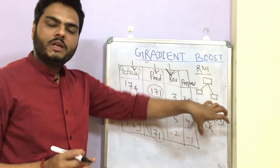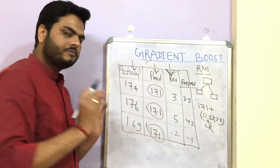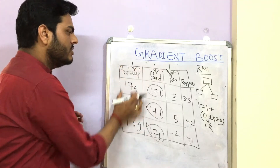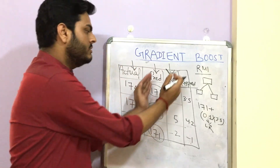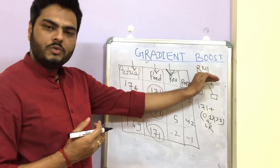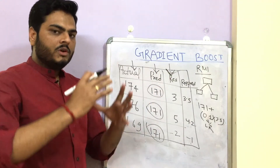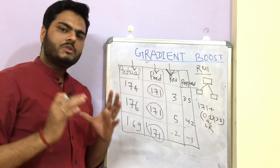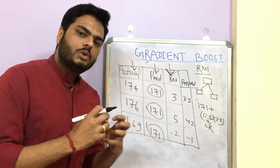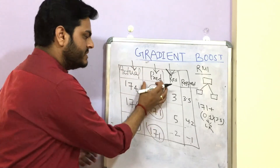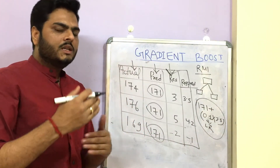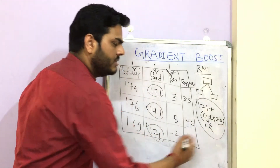Once we have the new predicted numbers, the residuals will change because we have the actual value and the new predicted value. The same process repeats — residual model 2 will come, and it will update the prediction again. We are trying to come closer to the actual values with each iteration.